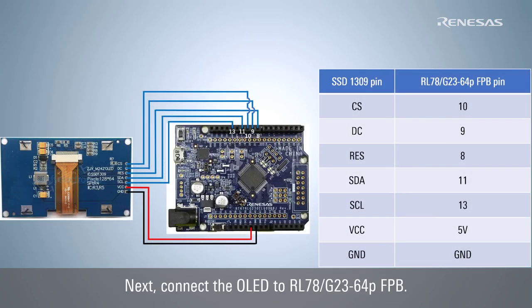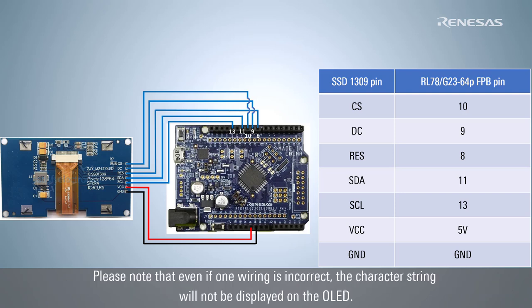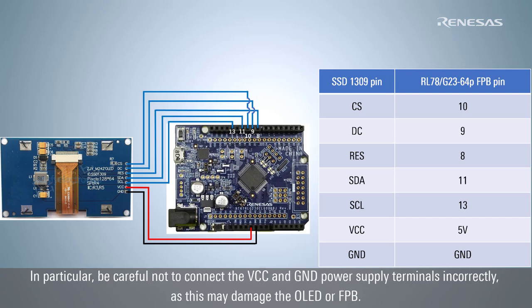Next, connect the OLED to the RL78G23 64-pin FPB. Connect the wiring of the RL78G23 64-pin FPB and SSD1309 as shown in the diagram. Please note that even if one wiring is incorrect, the character string will not be displayed on the OLED. In particular, be careful not to connect the VCC and GND power supply terminals incorrectly, as this may damage the OLED or FPB.